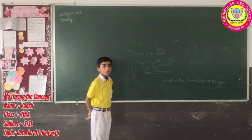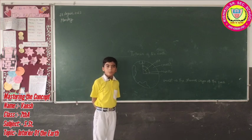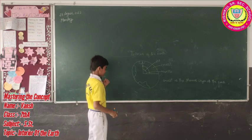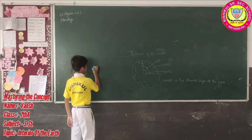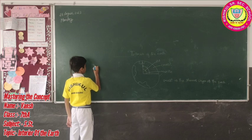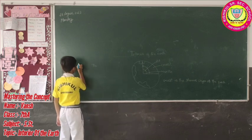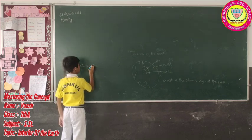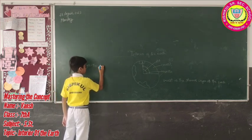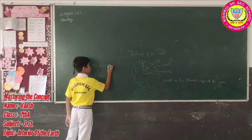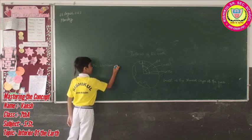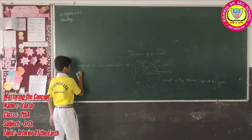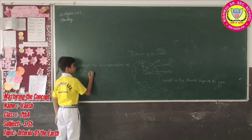Next is rocks. Rocks are formed due to the solidification of molten magma. Next is the rock cycle — the transformation of rock from one form to another.